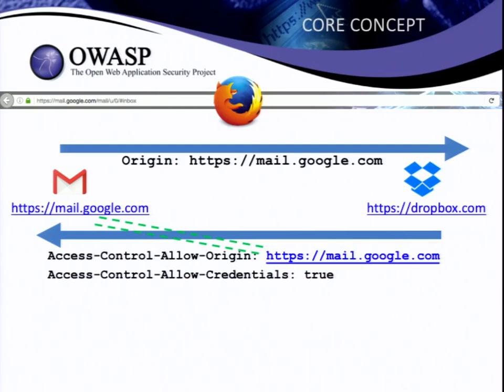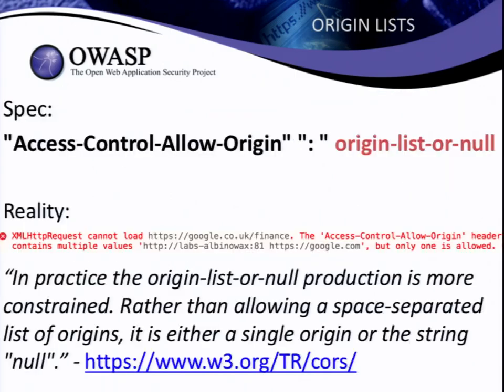What if Dropbox decides that Yahoo Mail is also highly secure and they want to support them as well? If you look at the specification, you might think you can specify a list of origins — but in practice, no browsers support that. It simply won't work. So what do you do if you're Dropbox and you want to support both Gmail and Yahoo Mail? And what if you're a completely different company and you want to allow cross-origin access from all of your subdomains?